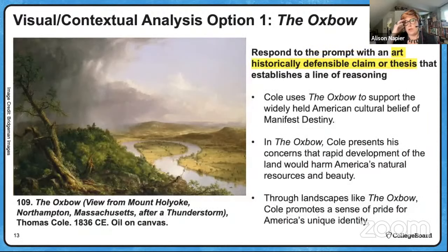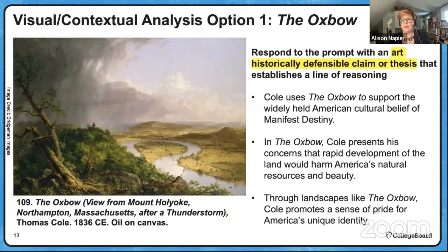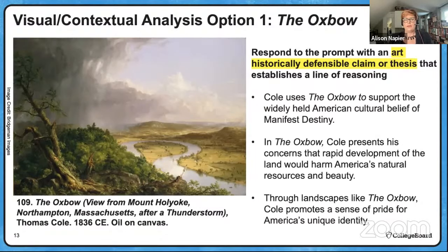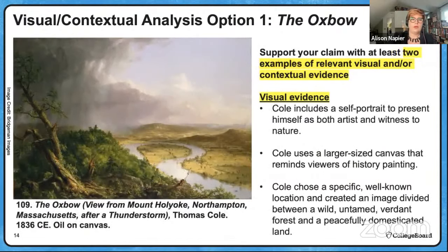Let's make a claim statement. Cole is using the Oxbow to support the belief of Manifest Destiny — we've got to talk about the natural world and how it's asserting a social or political agenda. We can talk about Manifest Destiny, or on the other side of the argument, his concerns about the rapid development of America's civilization and what it means for natural resources. We can also talk about a sense of American pride in the landscape and creating a unique American identity — in 1836 we're only about 60 years out from independence, still feeling our way out as a nation and looking for symbols of what it means to be American.